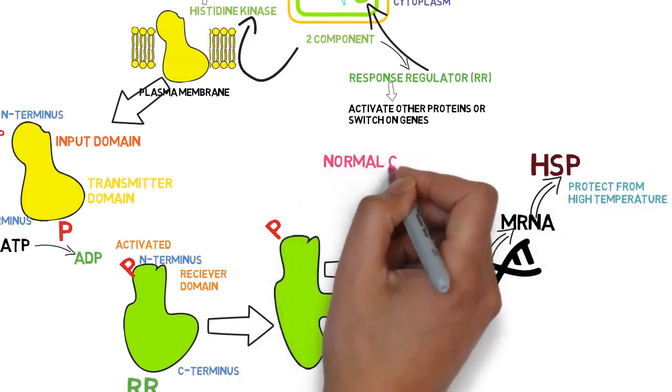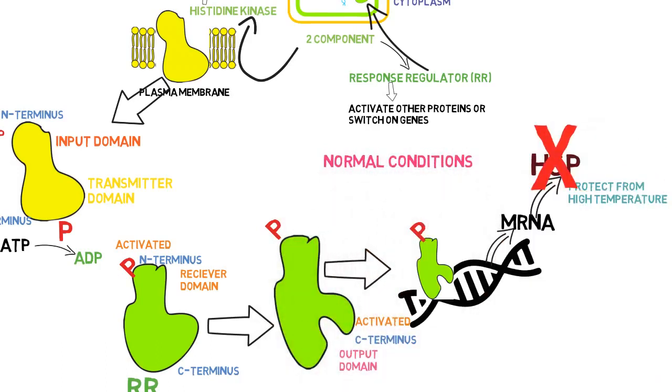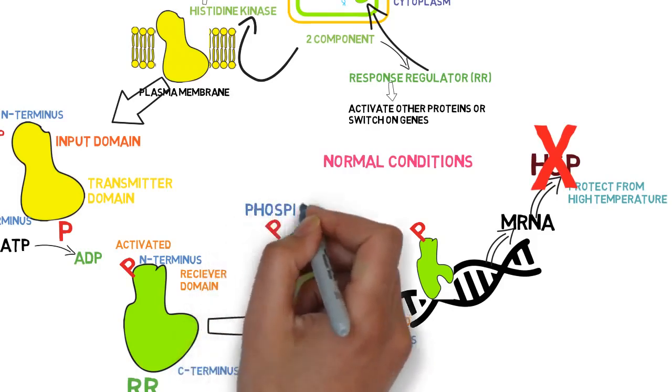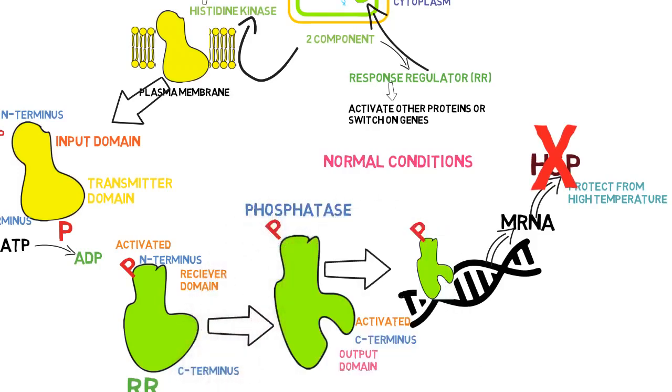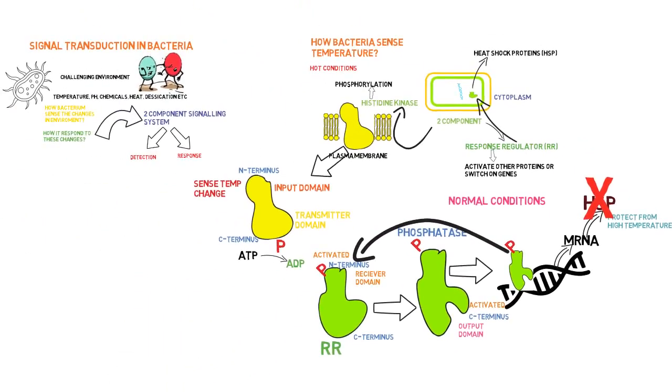With the return of normal environmental conditions, bacteria no longer need to synthesize heat shock proteins. So the response regulator protein becomes inactivated by dephosphorylation. The phosphate group is removed by a special enzyme called phosphatase.